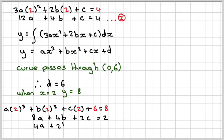These are all divisible by 2, so dividing down by 2 gives 4a plus 2b plus c equals 1. We'll call that equation 3.